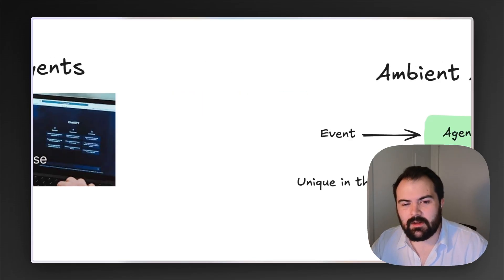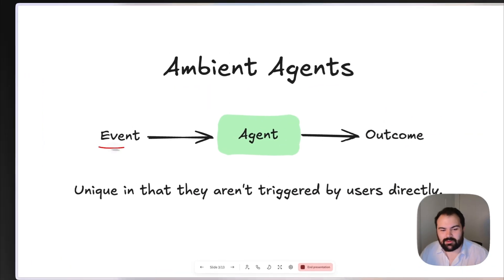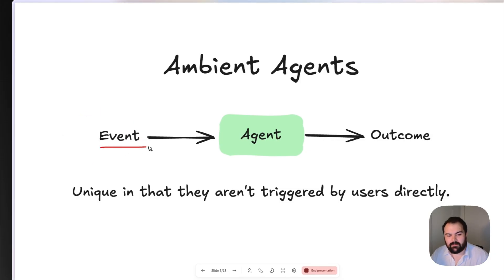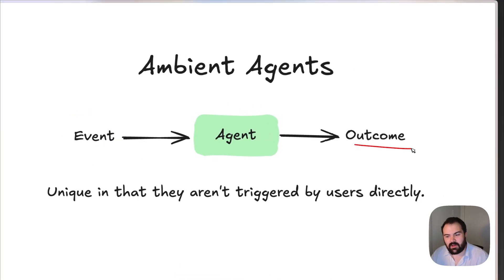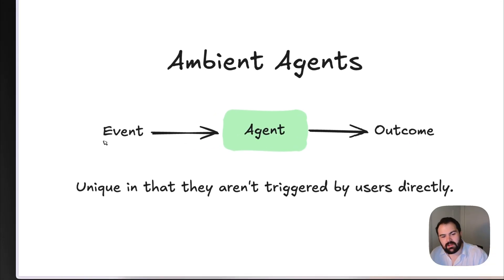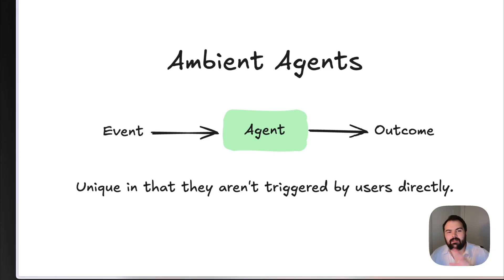So I really love that this term got coined. Effectively, an ambient agent is any agent that can take some sort of event — it's event driven. This event gets processed by the agent to produce some form of outcome. And it's mostly unique in that this event isn't a person asking for something. This isn't the same as you doing a deep research query or kicking off an AI to create a photo or video for you. This is an event triggered by the environment — it could be something that runs every morning, or when you get a certain number of emails into your inbox.